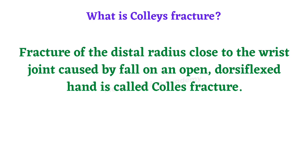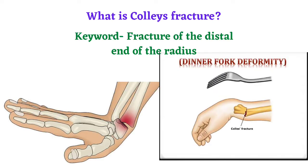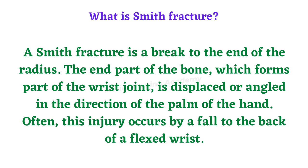Colles' fracture is a fracture of the distal radius very close to the wrist joint, caused by a fall with severe dorsiflexion of the hand. There is damage to the distal radial bone. You can see in the image the severe dorsiflexion and the radial bone fracture. The deformity seen in Colles' fracture is dinner fork deformity — because of dislocation of the radial bone, the hand and forearm change position like a dinner fork.